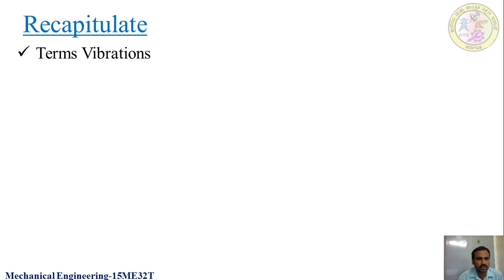So what are some of the important terms? First is frequency. Frequency means it is the number of cycles per given unit time, stated as the frequency. And then what is time period? It is the time required to complete one cycle, stated as time period.